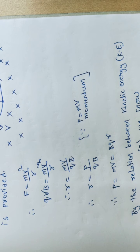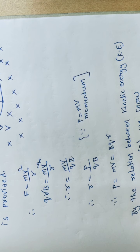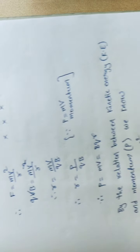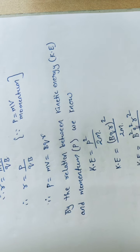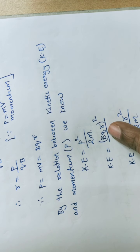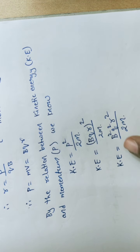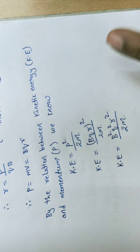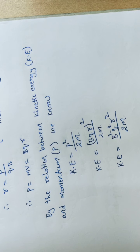Since KE = P²/2M, we also have P² = 2MK, so P = √(2MK). Therefore, the radius can also be expressed as R = √(2MK) / QB. From these relations, R is proportional to momentum, R is proportional to velocity, and R is proportional to √KE, where R is the radius of the circular path.